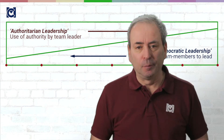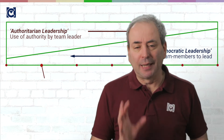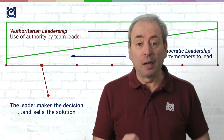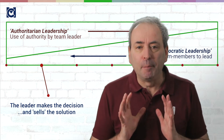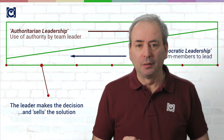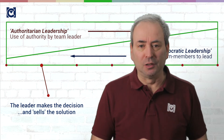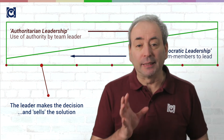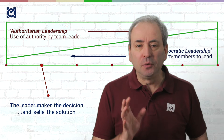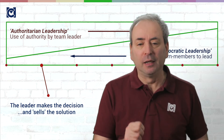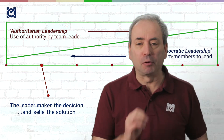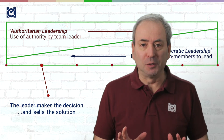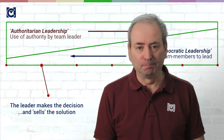At the second level, the manager still makes their decision and still expects the team to comply with it, but they take a bit of time to sell the solution to the team. Here, as a team leader, you care that your team agree that it is an appropriate solution, though you don't require them to believe that it is the right solution.